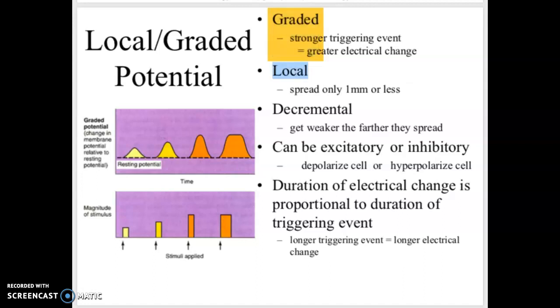They are local, so they're going to be really small, just confined to one area. They're decremental, so that means as they spread across the plasma membrane, they decrease in their strength.